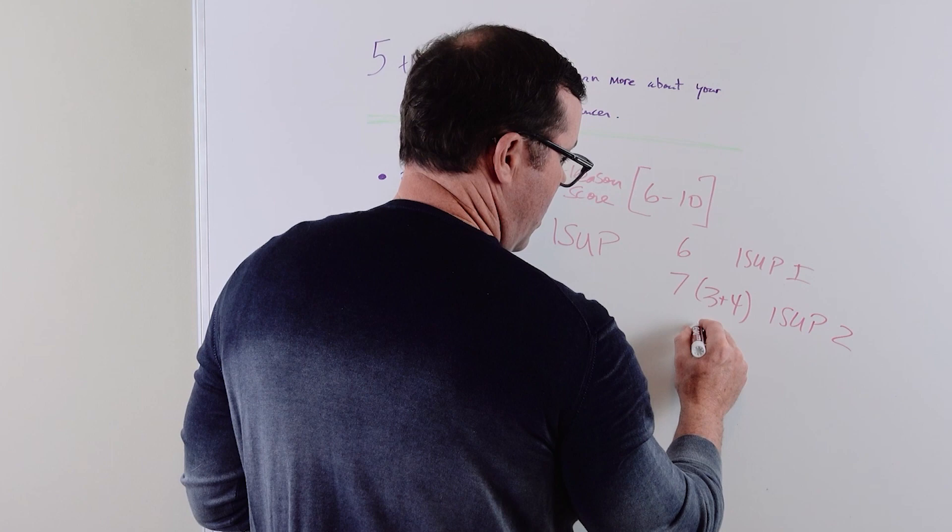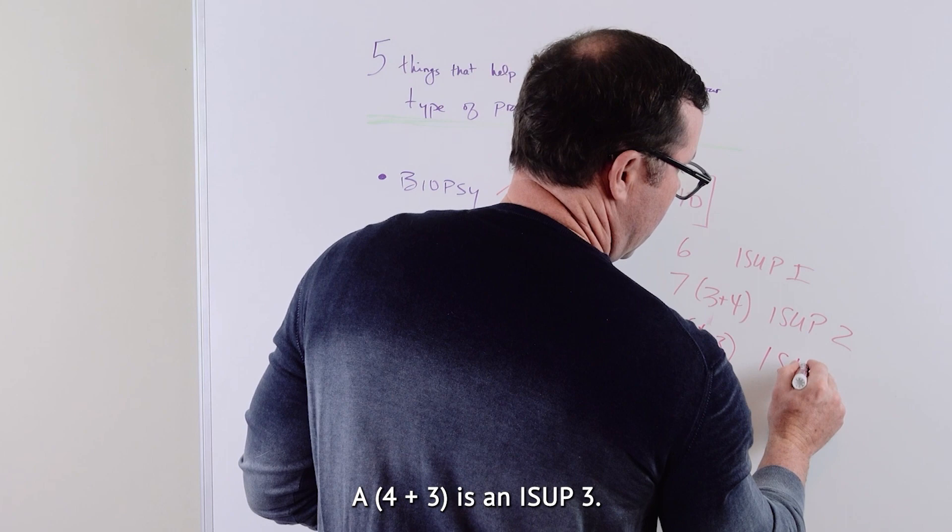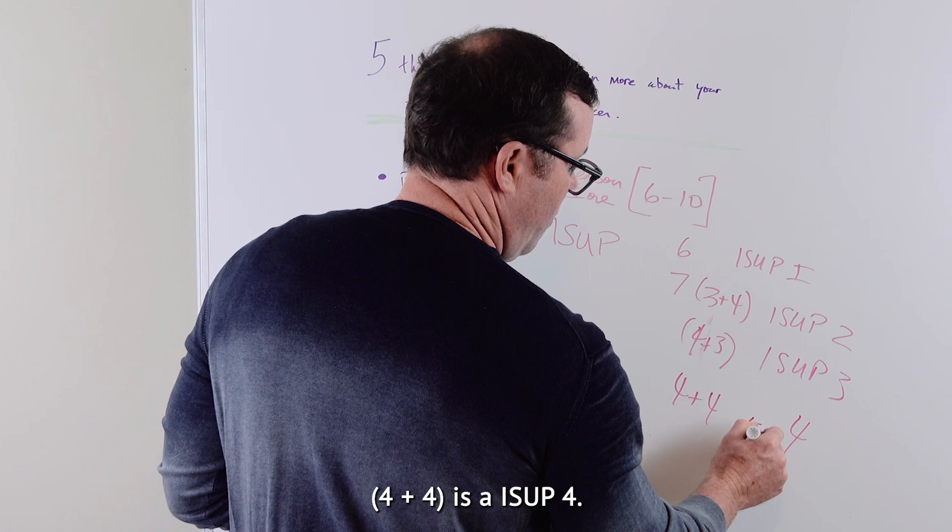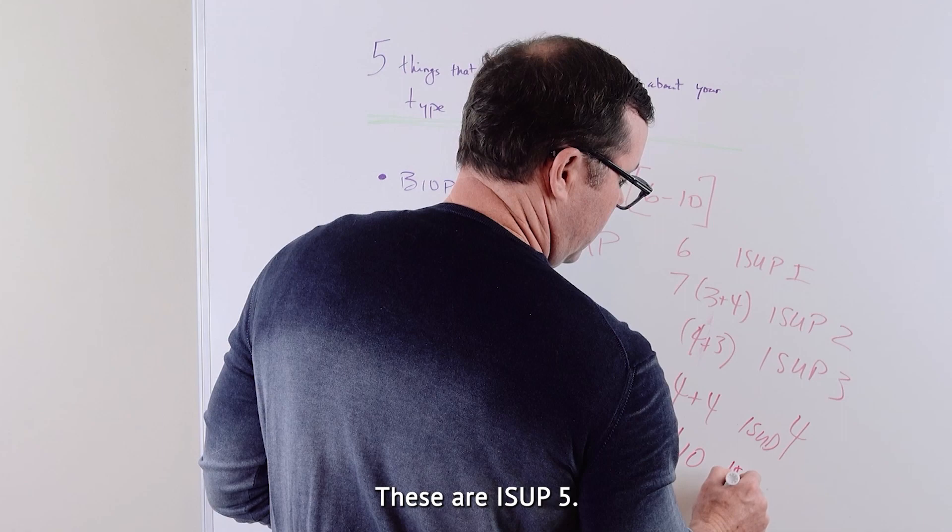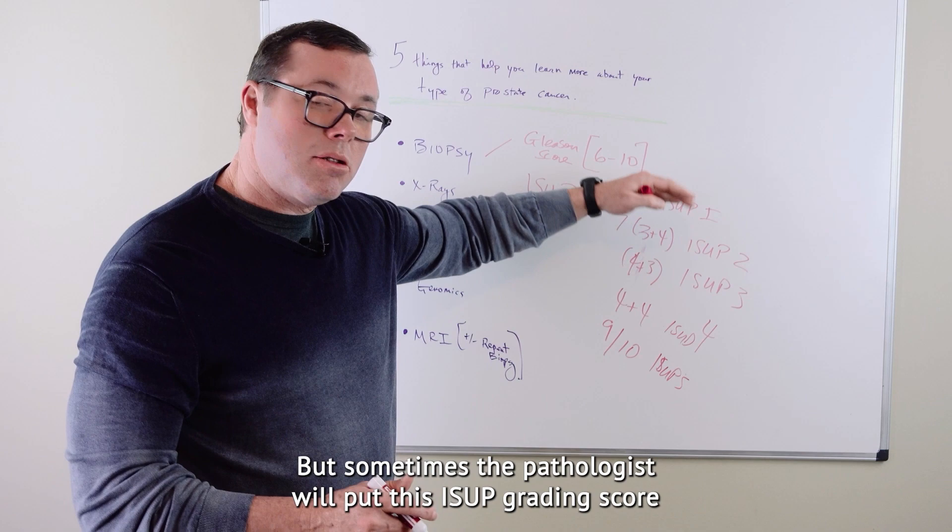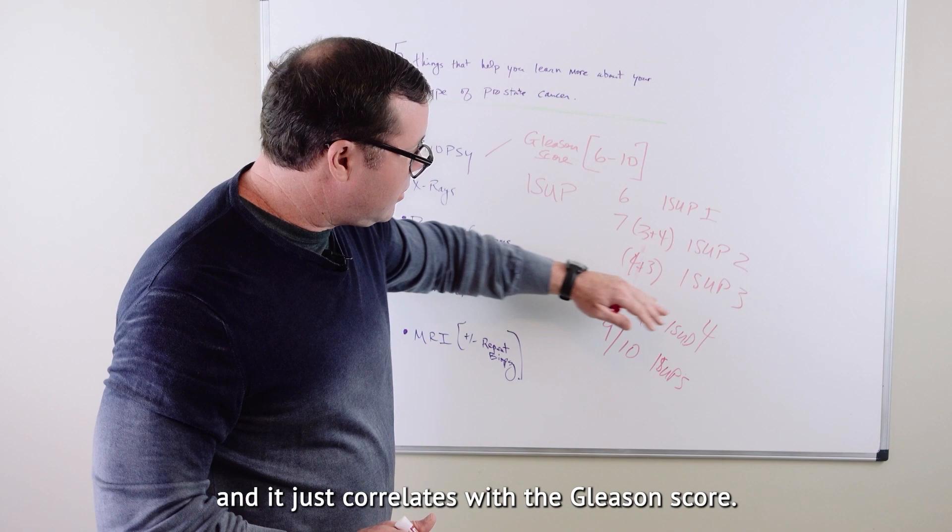This equates into the aggressiveness of cancer or the risk of cancer. It's a number between six and ten. This can also be what's called an ISUP grading score, where a Gleason 6 is an ISUP grade group 1. A Gleason 7, 3 plus 4 is an ISUP 2. A 4 plus 3 is an ISUP 3. 4 plus 4 is an ISUP 4. And Gleason 9 and 10, these are ISUP 4.